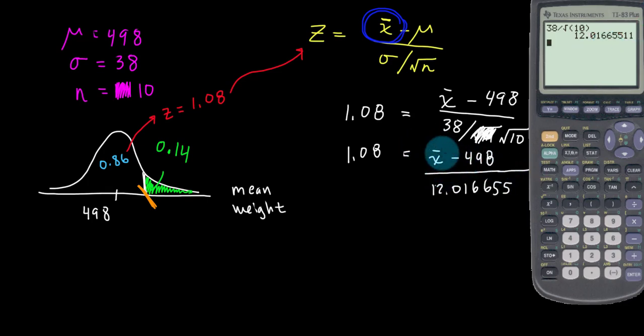Now we need to solve for x-bar. So I'm going to multiply both sides by that 12.01. And that's going to multiply the 1.08. So I believe I can just type this in. And on the left side now, I've got 12.977.